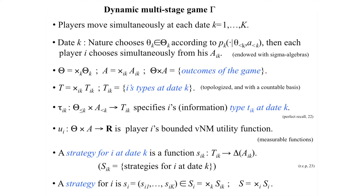We index information by something we call a type. Player I's type at date K is just another way of saying an information set. Capital T_{I,K} is the set of player I's types at date K, and the product of all those is capital T. Each type space is endowed with a topology with a countable basis. There's a type function that maps the history at date K — including nature's choice and past actions — into a type for each player.